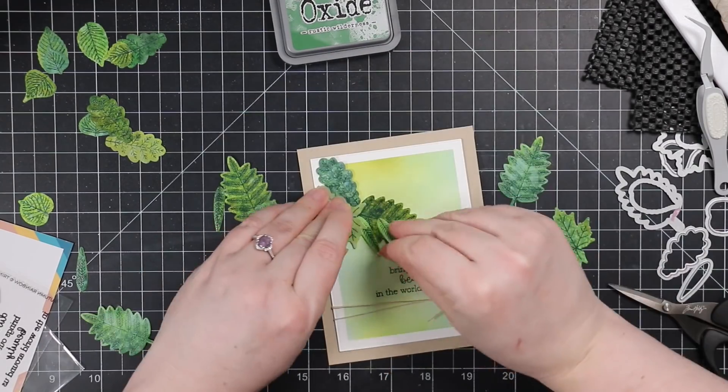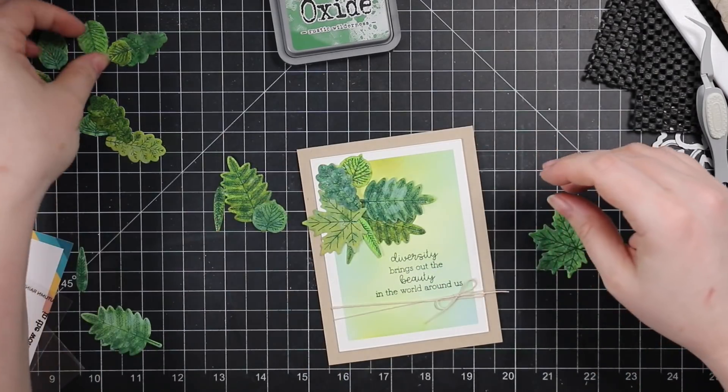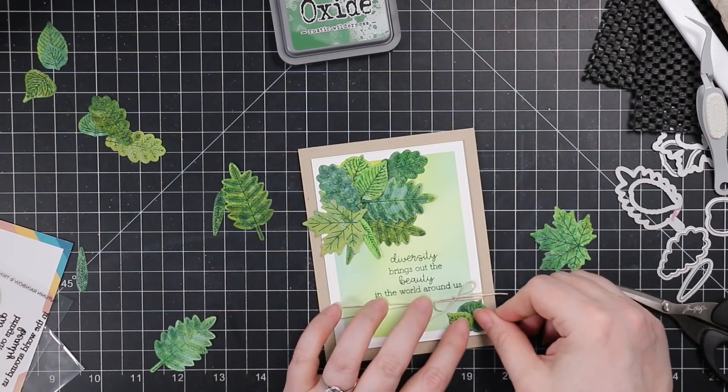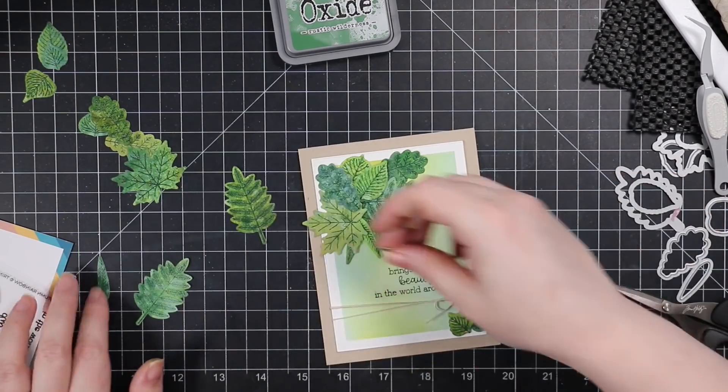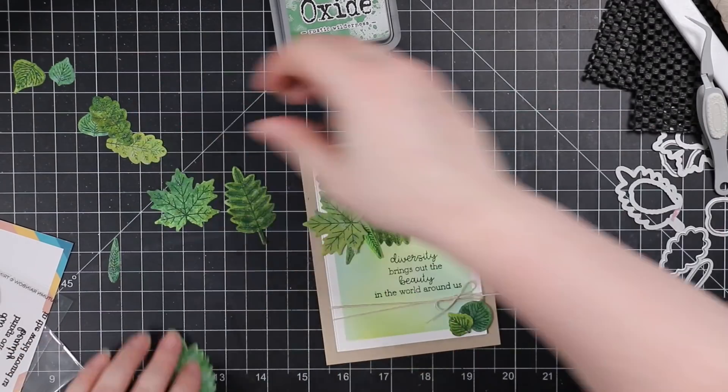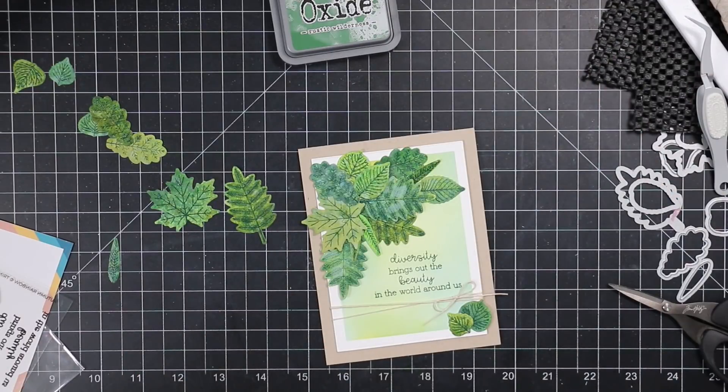So I sat and fiddled and kind of just created this cluster with all of these leaves. And again, like I did greens, but to do these fall colors, it would just, it will look so beautiful. There's just something about fall colors, but I just, I couldn't do it today. I just, I needed green. I needed green and spring and hope.